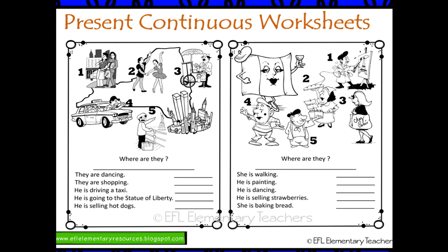Now let's look at the present continuous worksheets. We have pictures — number one, two, three, four, five. For example, number two: 'They are dancing,' meaning those couples are still dancing now. 'They are shopping.' 'He is driving a taxi' — that man is driving a taxi; I use the present continuous to indicate he is still driving now. 'He is painting' — he is still in the process of painting, he hasn't finished yet. All of them are doing activities that are not finished yet.